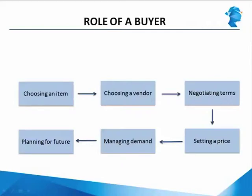Once the buyer has identified the item, he chooses the appropriate vendor for that item. Here, he makes a choice whether he wants to buy a national brand for that item or make his own private brand. The other choice he makes is where he sources that item from — locally or from elsewhere.